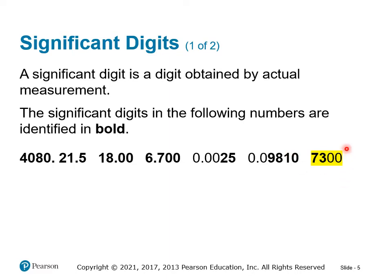Notice that 7,300 at the far right — the two trailing zeros are not considered significant because there's no decimal point. But 4080 with a decimal point: the last zero is significant because there's a decimal point. The trailing zeros in 6.7 are considered significant, but the leading zeros are not.